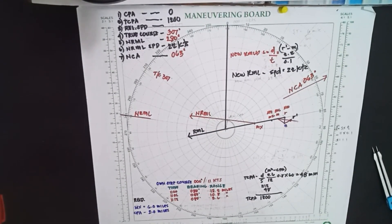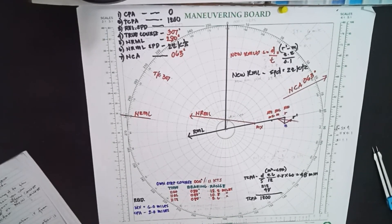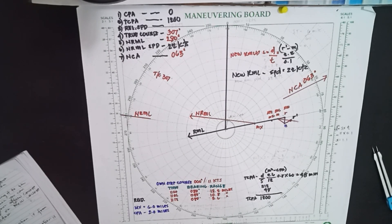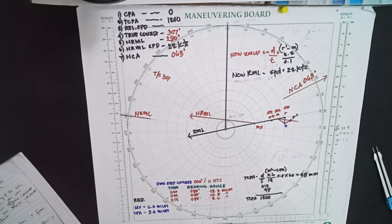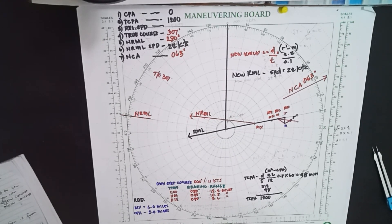So you now have the new course to alter, which is 063 degrees, and the new NRML is 280 degrees. As you can see, the old RML is not satisfactory — it has a zero CPA. That's why we are creating a new NRML to have a 2 nautical miles CPA. The new course to alter is 063 degrees.